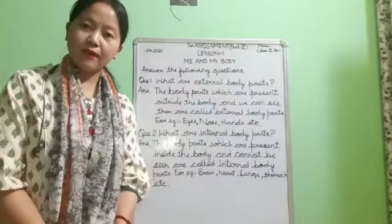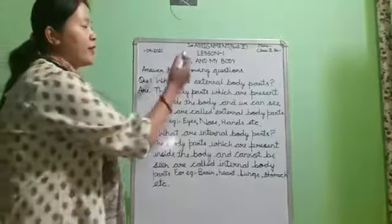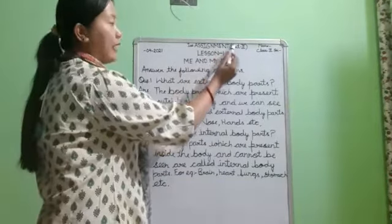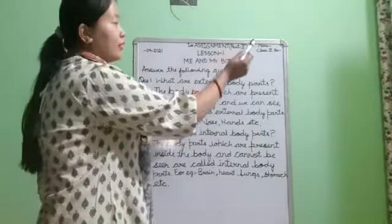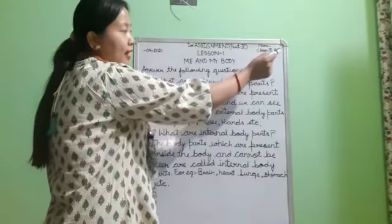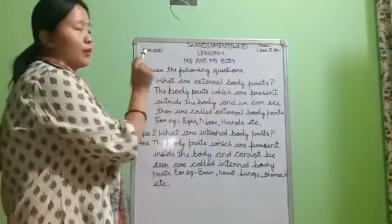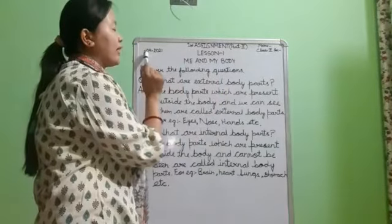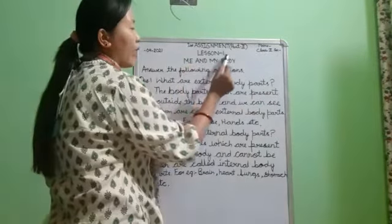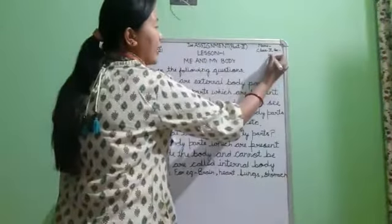Now children, take out your notebook. First write 'Assignment Part 2' in capital letters, then mention your name, class, and section. Come to the next slide, mention the date, then write 'Lesson 1' in capital letters.